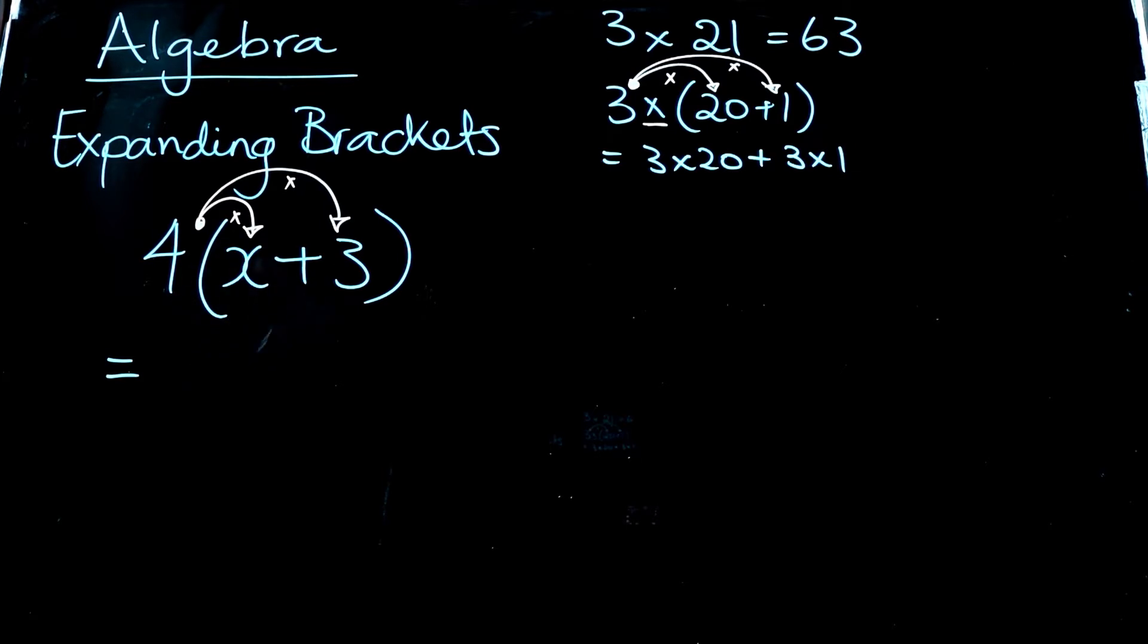And so when you first start out this, I want to see something like this as a little reminder for you to say, well, I need to multiply everything. This 4 needs to be multiplied through each of the things inside the brackets here. So 4 times X, we just write that as 4X, put the plus sign in there because I just got a plus sign there, and then 4, follow the next arrow across, 4 times 3. Just remember we put the little times sign in, 4 times 3 is 12.